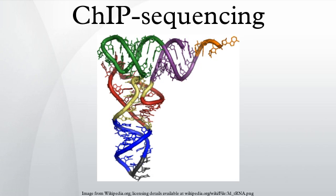ChIP-Seq offers an alternative to ChIP-Chip. STAT-1 experimental ChIP-Seq data have a high degree of similarity to results obtained by ChIP-Chip for the same type of experiment, with greater than 64% of peaks in shared genomic regions. Because the data are sequence reads, ChIP-Seq offers a rapid analysis pipeline as well as the potential to detect mutations in binding site sequences, which may directly support any observed changes in protein binding and gene regulation.